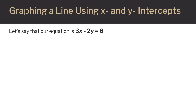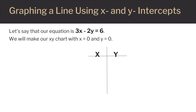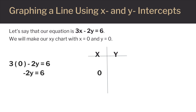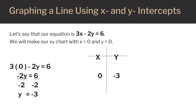Let's do another example. Say we have the equation 3x minus 2y equals 6. We'll start by drawing an xy chart and find our 2 points when x equals 0 and y equals 0. When x equals 0, we have 3 times 0 minus 2y equals 6. Since 3 times 0 equals 0, this becomes negative 2y equals 6. Dividing both sides by negative 2, we get y equals negative 3. Our first point is (0, -3).